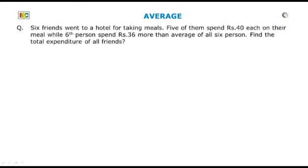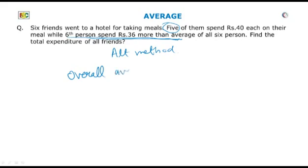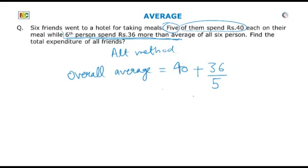We can solve this question by this method also. Here, six persons are giving 36 extra to bring the contribution of the other five persons to the overall average. So the overall average equals 40, that is the contribution of five persons, plus the extra contribution of the sixth person, that is 36 divided by 5.